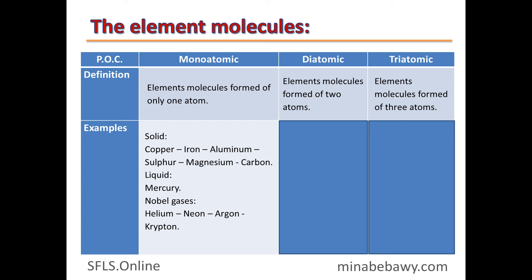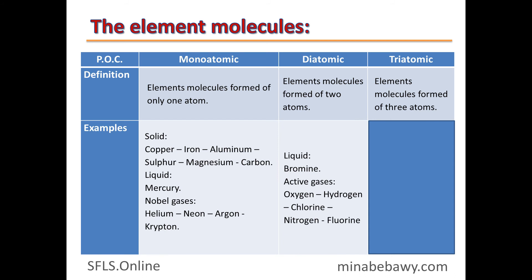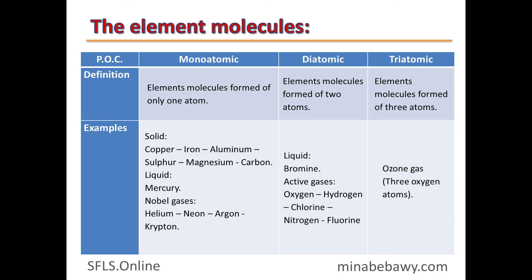Examples for diatomic elements — liquid: bromine. Bromine is the liquid element composed of two atoms. All active gases are diatomic, such as oxygen, hydrogen, chlorine, nitrogen, and fluorine. Triatomic elements include ozone, the molecule which forms the ozone layer that protects us from ultraviolet radiation.